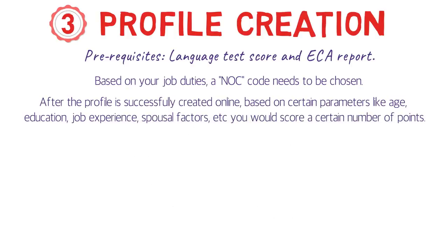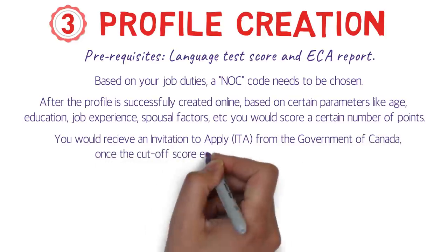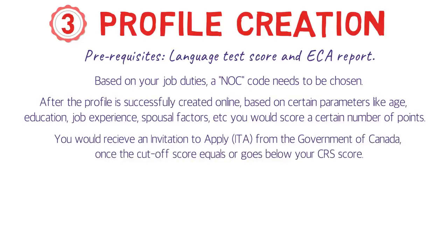After your profile is created online, based on parameters like age, education, job experience, and spousal factors, you receive a CRS score — Comprehensive Ranking System. You then receive an Invitation to Apply (ITA) from the Government of Canada once the draw cutoff equals or falls below your CRS score. For example, if your CRS is 445 and the cutoff is 449, you won't receive an ITA until the cutoff drops to 445 or below.